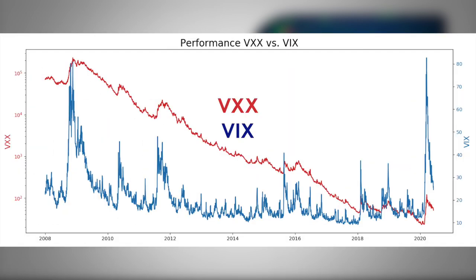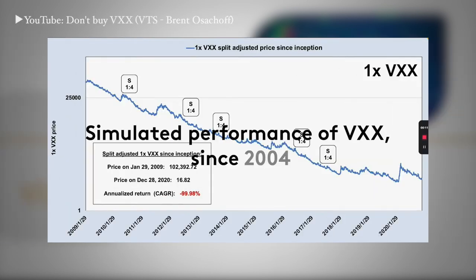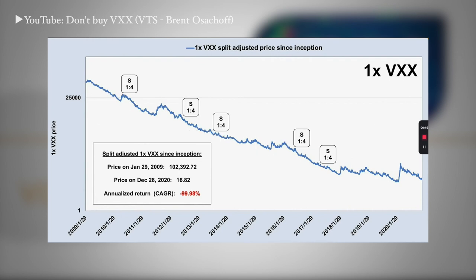Again, it doesn't trade the spot — that's a very important difference that you can see in the performance. I'm showing the splits here because the VXX has done five reverse splits since inception to keep the price from bleeding down to zero, because that's exactly where it goes. On a split-adjusted basis, it launched at a price of over $102,000, and as of making this video it is below $17 — down 99.9% since inception.